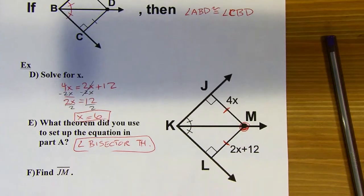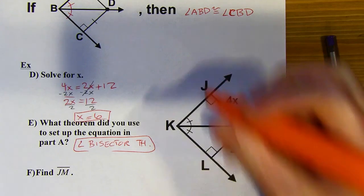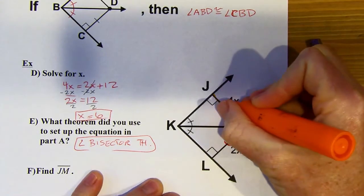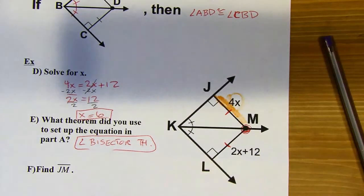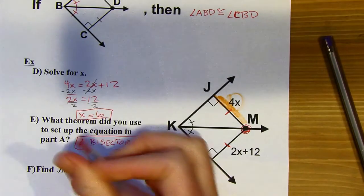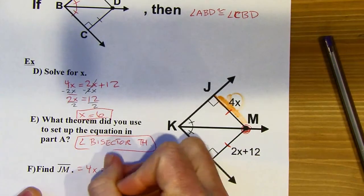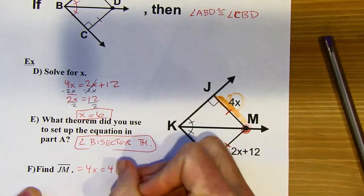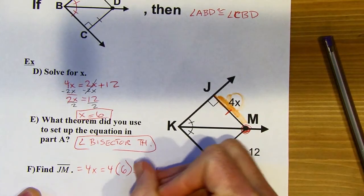Sometimes you're looking for x, but sometimes you're looking for some other value in the diagram. Here we're looking for JM. That's going to have a length of 4x. I already figured out that x was 6, so this is going to be 24 units.